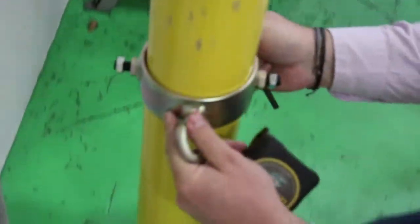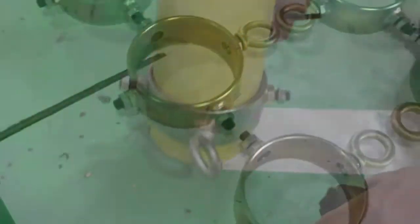First, measure your existing bollard diameter. The diameter of this bollard is 4 1/2 inches, which constitutes a size number 5 bollard attachment ring.